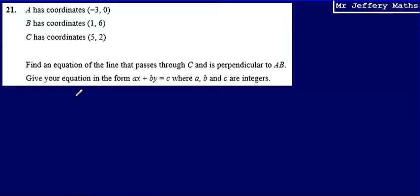This is question 21 from a series of videos looking at the Edexcel practice papers. We're told that A has coordinates negative 3, 0; B has coordinates 1, 6; and C has coordinates 5, 2. What we're asked to do is find an equation of the line that passes through C and is perpendicular to AB.